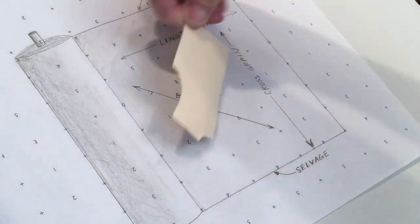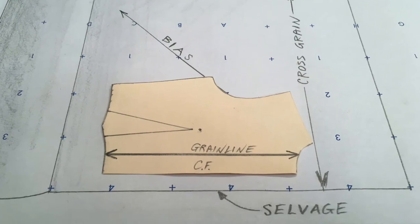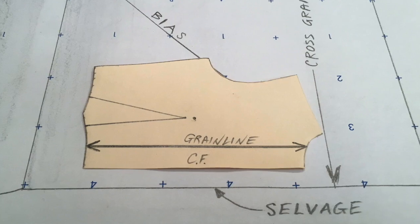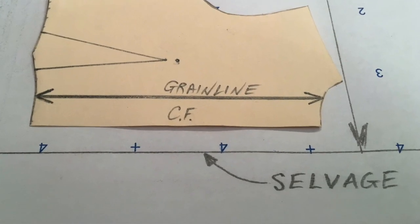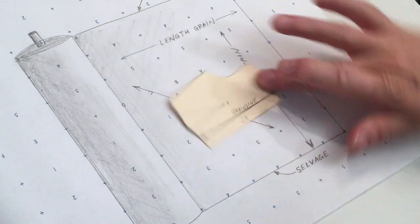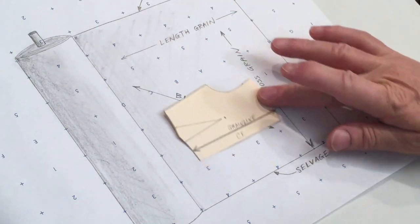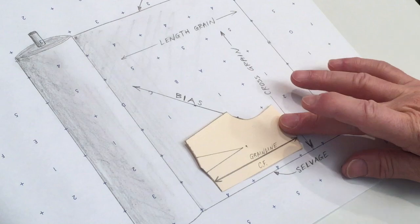This way, this way, this way, but with a grainline, the grainline is always parallel to the selvedge. So it goes like this, not like this, not like this, but it's always parallel to the selvedge.